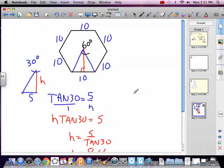Awesome. So now we know that this red line is 8.66, so we can find the area of this triangle because it's one-half base times height, one-half length of the base times length of the height. So one-half ten times 8.66.